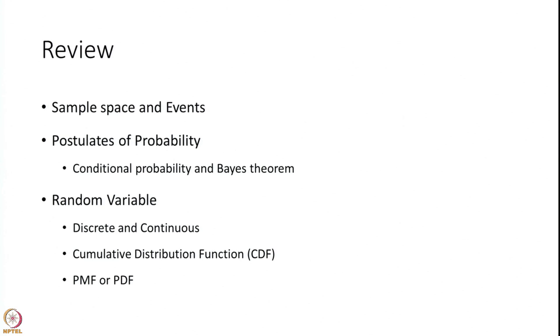Then we introduced what is known as a random variable, which is a real function defined from a probability space — a sample space with a probability measure — to a real line. It could be discrete or continuous depending on the kind of values it takes. If it takes countable values, finite or infinite, it is called discrete; if it takes continuous values, it is called a continuous random variable. With every random variable there is a cumulative distribution function, which is the probability of that random variable taking a value less than or equal to a specified value x. For discrete random variables we have a probability mass function, and for continuous random variables we have a probability density function.